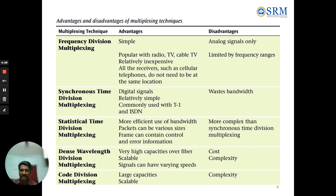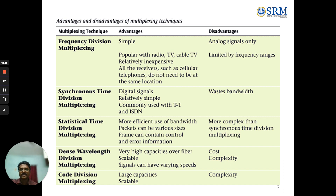The first multiplexing technique is Frequency Division Multiplexing. Its advantage is that it is simple and popular with radios, TVs, and cables, and is relatively inexpensive. Receivers such as cellular telephones do not need to be at the same location. The disadvantage is that it works on analog signals only and is limited by frequency rates.